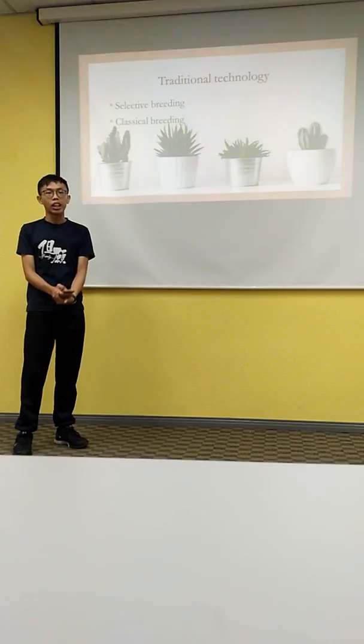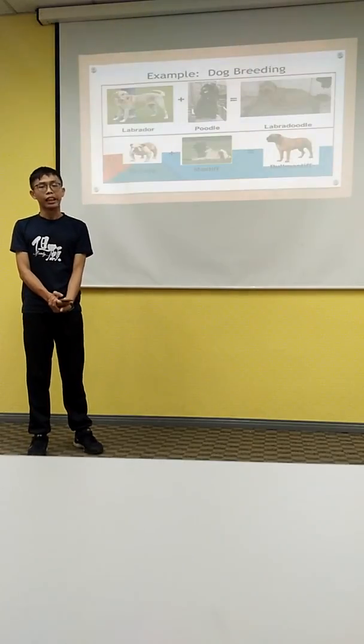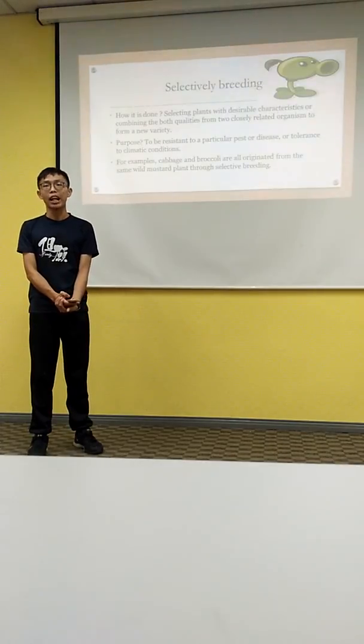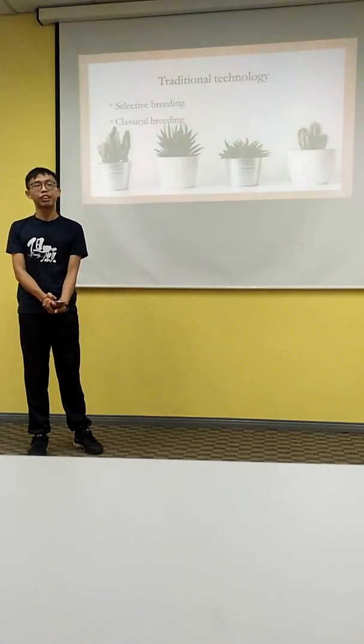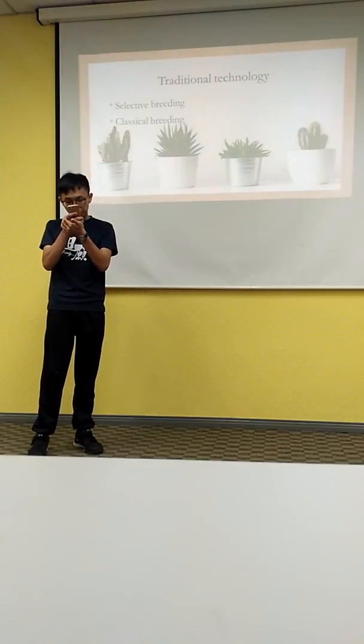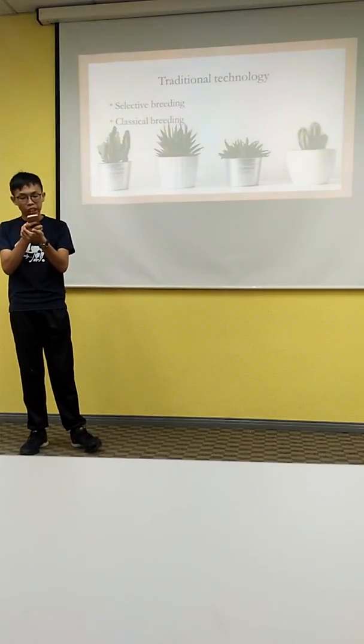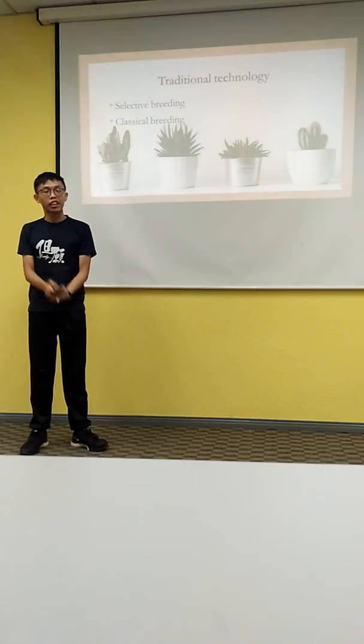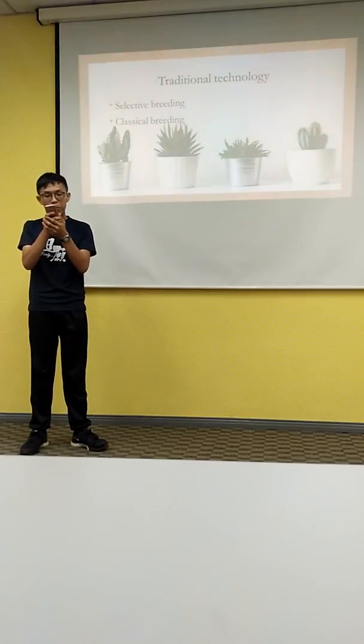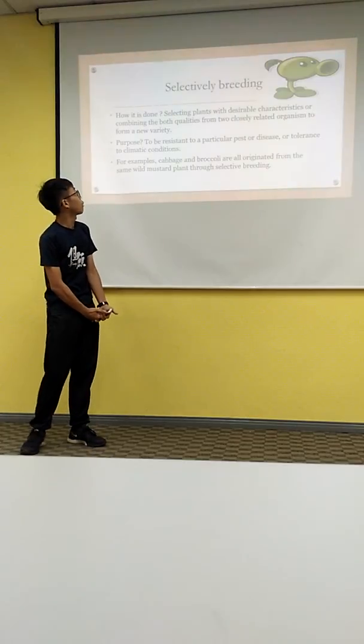Then comes the models known as genetic and genomic technology, which enables scientists to extract and transfer specific genes from one organism to another. With the development of new technology, many organisms with desirable traits can be inherited and produced precisely in a short time.